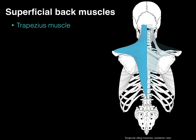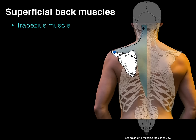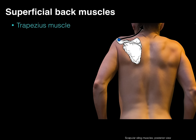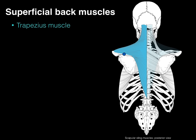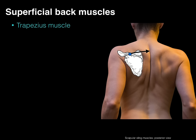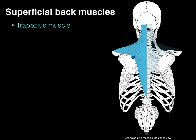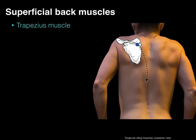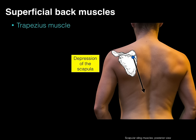The fiber orientations are what make the trapezius unique. From the acromion, muscle fibers course all the way up to the skull, so when they contract, they pull the scapula up — as in shrugging your shoulders — which we call elevation of the scapula. The middle fibers run more horizontally, so when they contract, they pull the scapula towards the midline, which we call adduction of the scapula. More medially, the fibers course downward, so when they contract, they pull the scapula down — depression of the scapula. Usually gravity does that, but against resistance, that's what those fibers do.